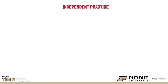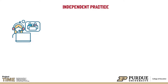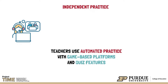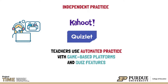Independent practice is another strategy for teachers to utilize in blended and online learning. For example, during synchronous learning toward the end of a lesson, teachers can provide students with automated practice using a game-based platform such as Kahoot or Quizlet, or using the quiz feature of the school's LMS, or using programs like Google Forms and Microsoft Forms.